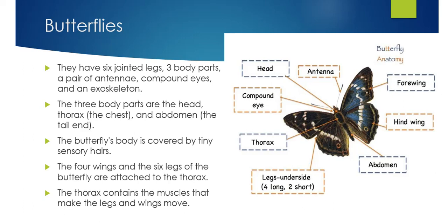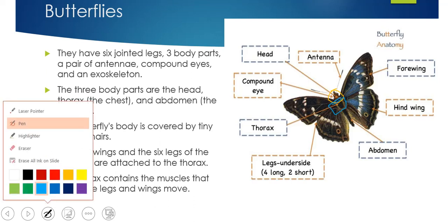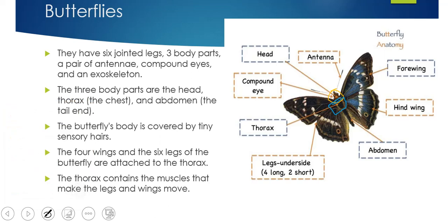The three parts of a butterfly body are the head, the thorax — which is the chest area — and the abdomen. The head is at the top, the thorax is here in the middle, and the abdomen is at the end.